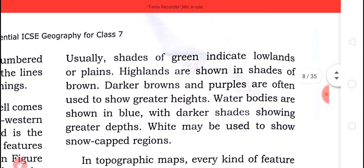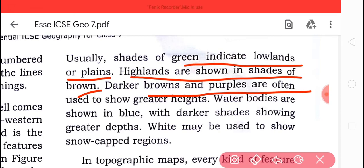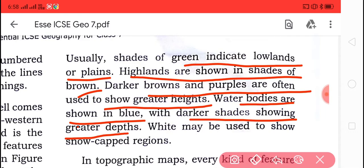Usually, shades of green indicate the lowlands or plains. Highlands are shown with the brown color. Darker brown and purple are often used to show the greater heights. Water bodies are shown in blue color with darker shades showing the greater depth. White is used to show the snow-capped regions.